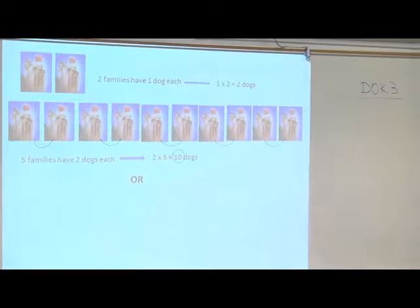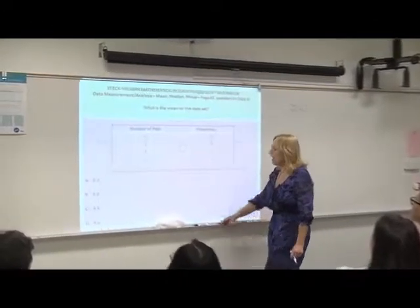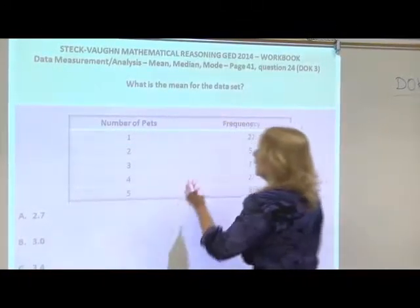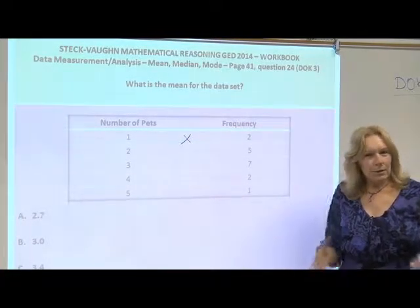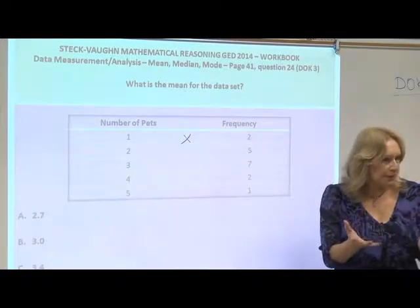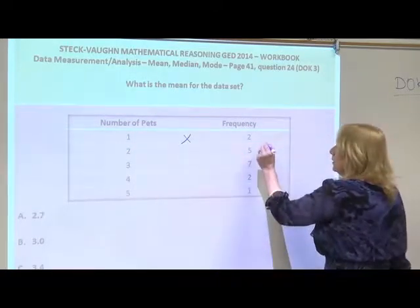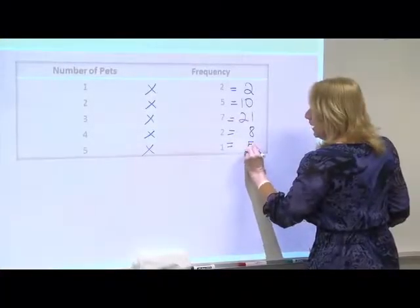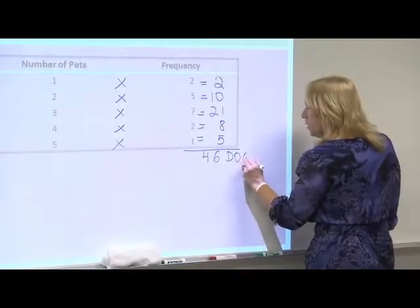Or instead of counting dogs, that would be very cumbersome. We can just think that if I have two persons that have one dog, I can just multiply instead of counting dog. But I want you to show the dog so that you understand why we are multiplying. It's not an addition. Two persons, one dog each, there are two dogs total here. So let's see how many dogs we have total here.